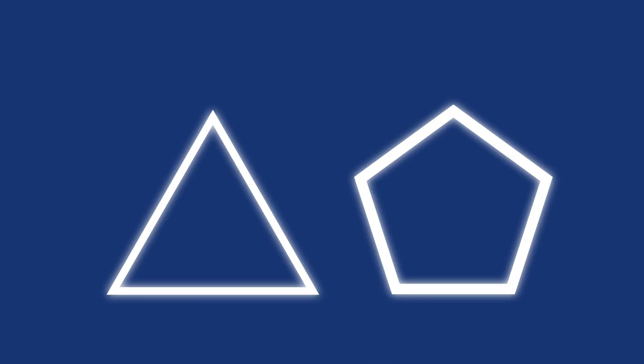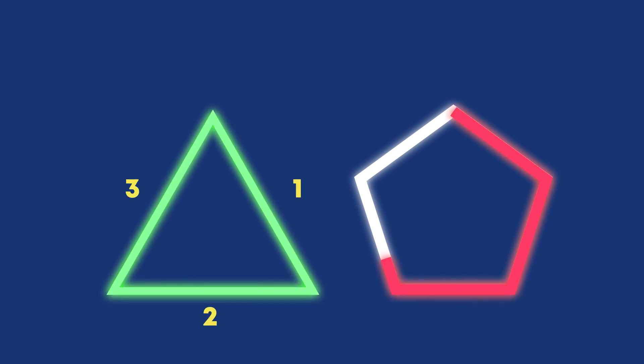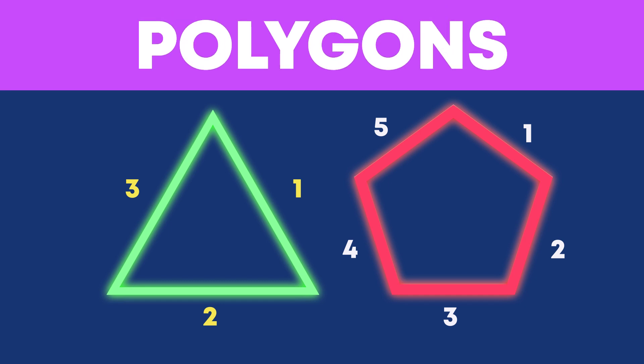2D shapes that have 3 or more straight lines or sides that are joined are called polygons. Say it with me: polygons.